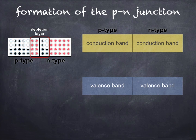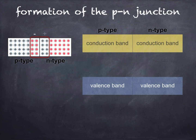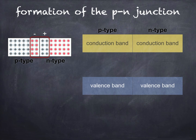The depletion layer is effectively an insulator, due to the lack of majority charge carriers within it. The P-type region within the depletion layer now has a net negative charge, due to the electrons diffusing into it from the N-type material. Similarly, the N-type region has a net positive charge, due to the holes diffusing into it from the P-type material. Because of this, a potential difference is set up between the ends of the depletion layer, known as the junction voltage or potential barrier, which opposes the flow of further charges across the junction. In order for the P-N junction to conduct, this junction voltage must be overcome.